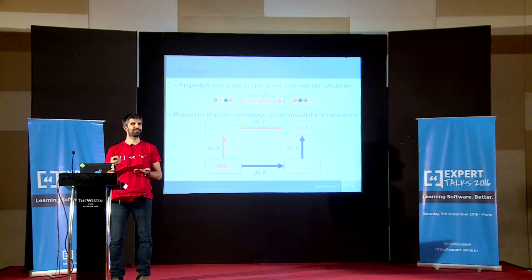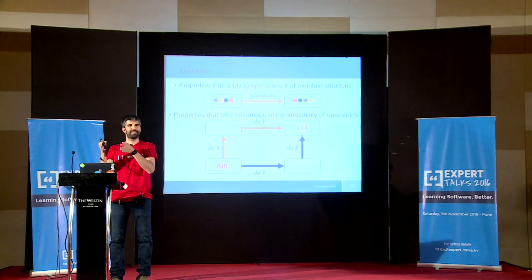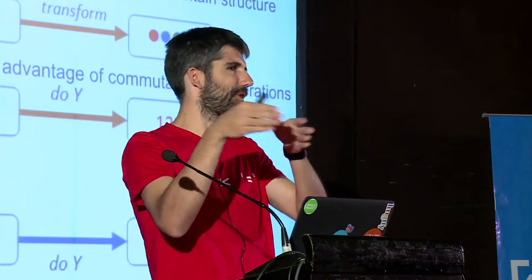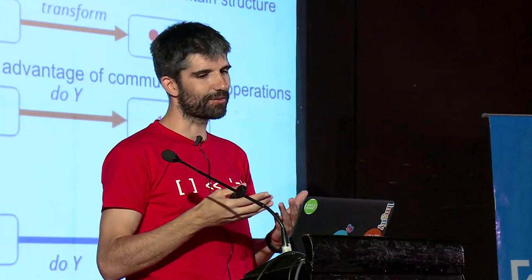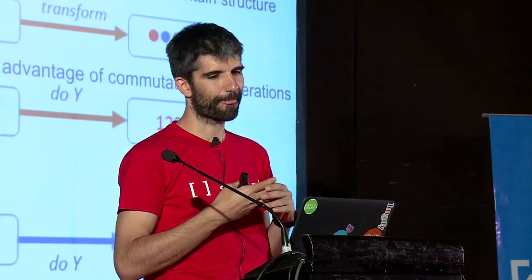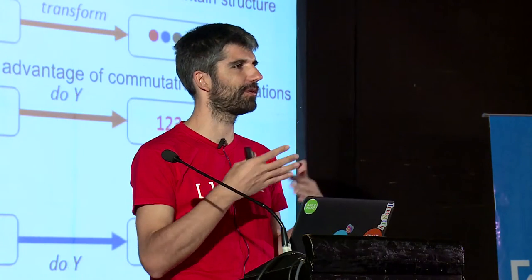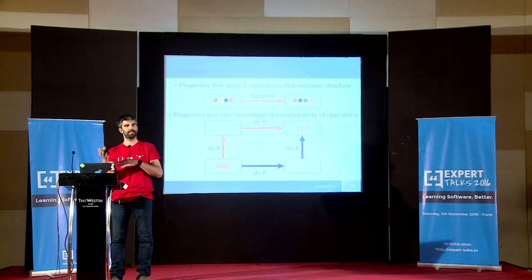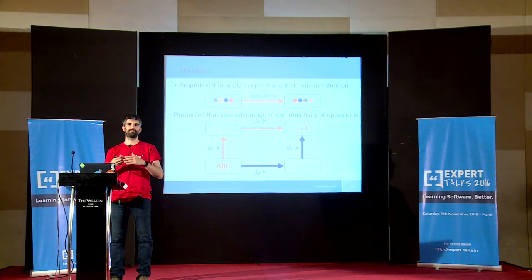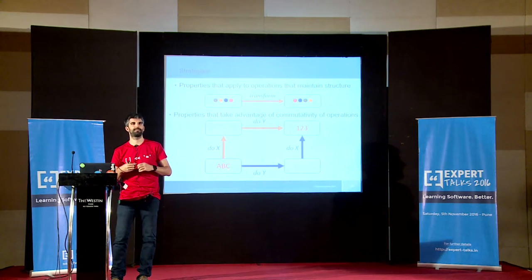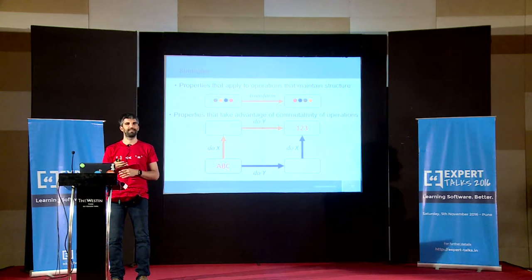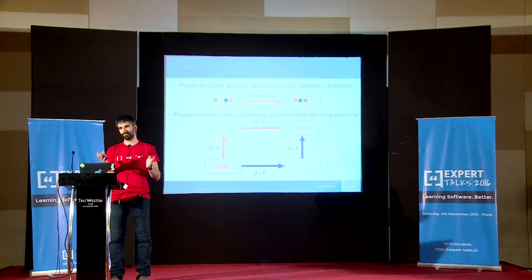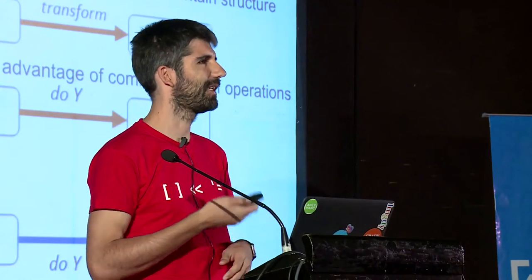The canonical example is sorting. You have things in a row and then swap them — same things, just different order. Another way is commutativity: functions that are commutative, so you can apply one first and then the other, or the opposite. For example, if you have a list of numbers and you sort them and then add one to all the numbers, it's the same as if you add one first and then sort them. They produce the same result. That's another property you can think of.